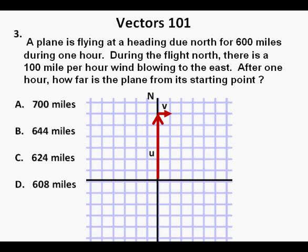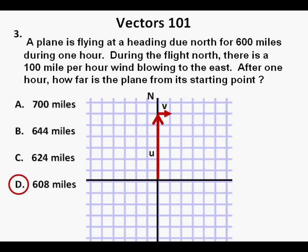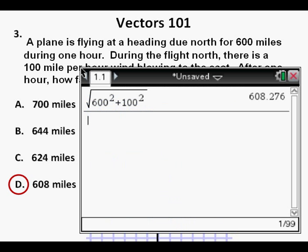Problem 3: A plane is flying due north at 600 miles per hour for one hour. During the flight, there is a 100-mile-per-hour wind blowing to the east. After one hour, how far is the plane from its starting point? The correct answer is D, 608 miles. This is a Pythagorean theorem problem — we take the square root of 600 squared plus 100 squared and get a little over 608 miles.